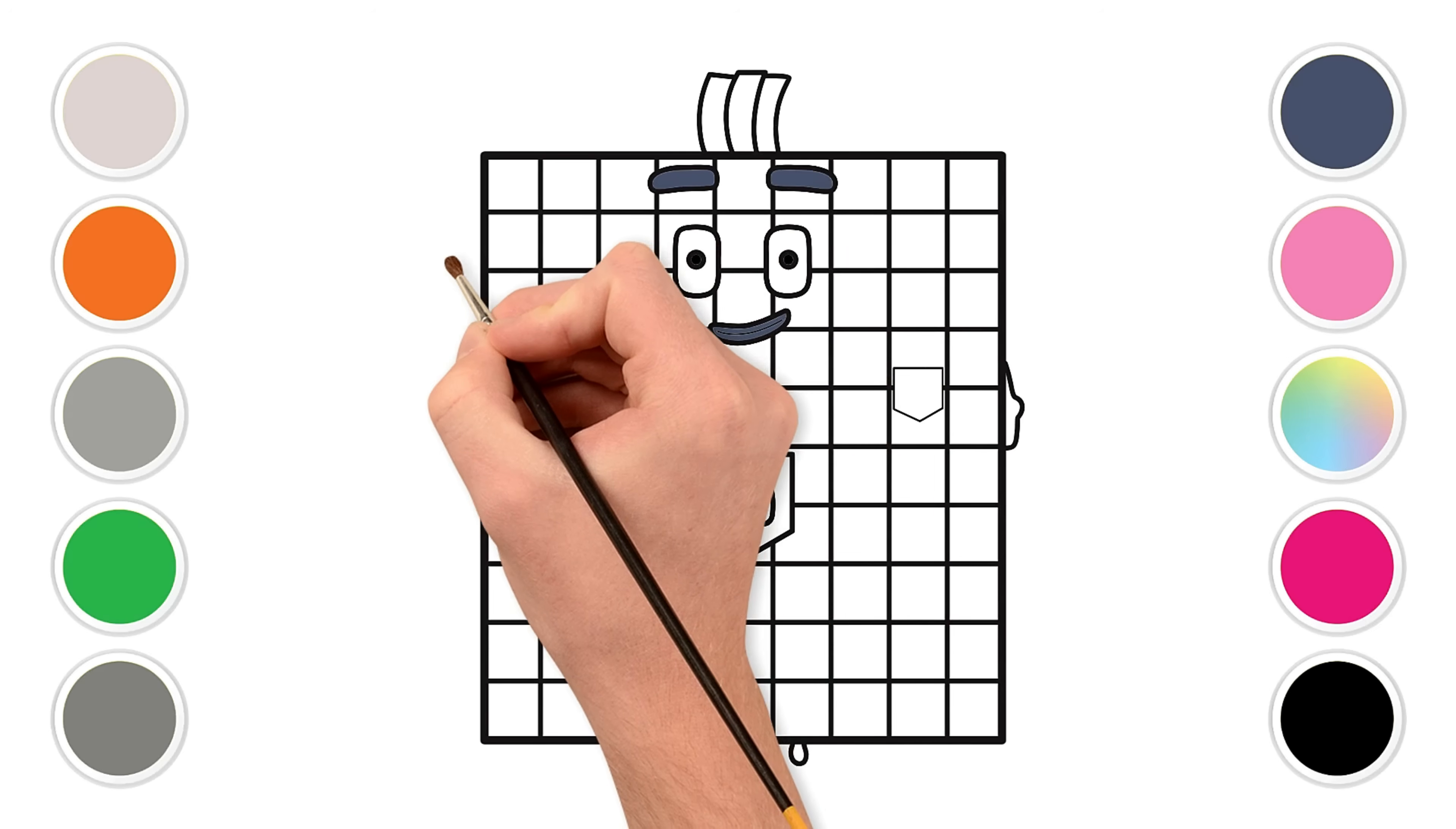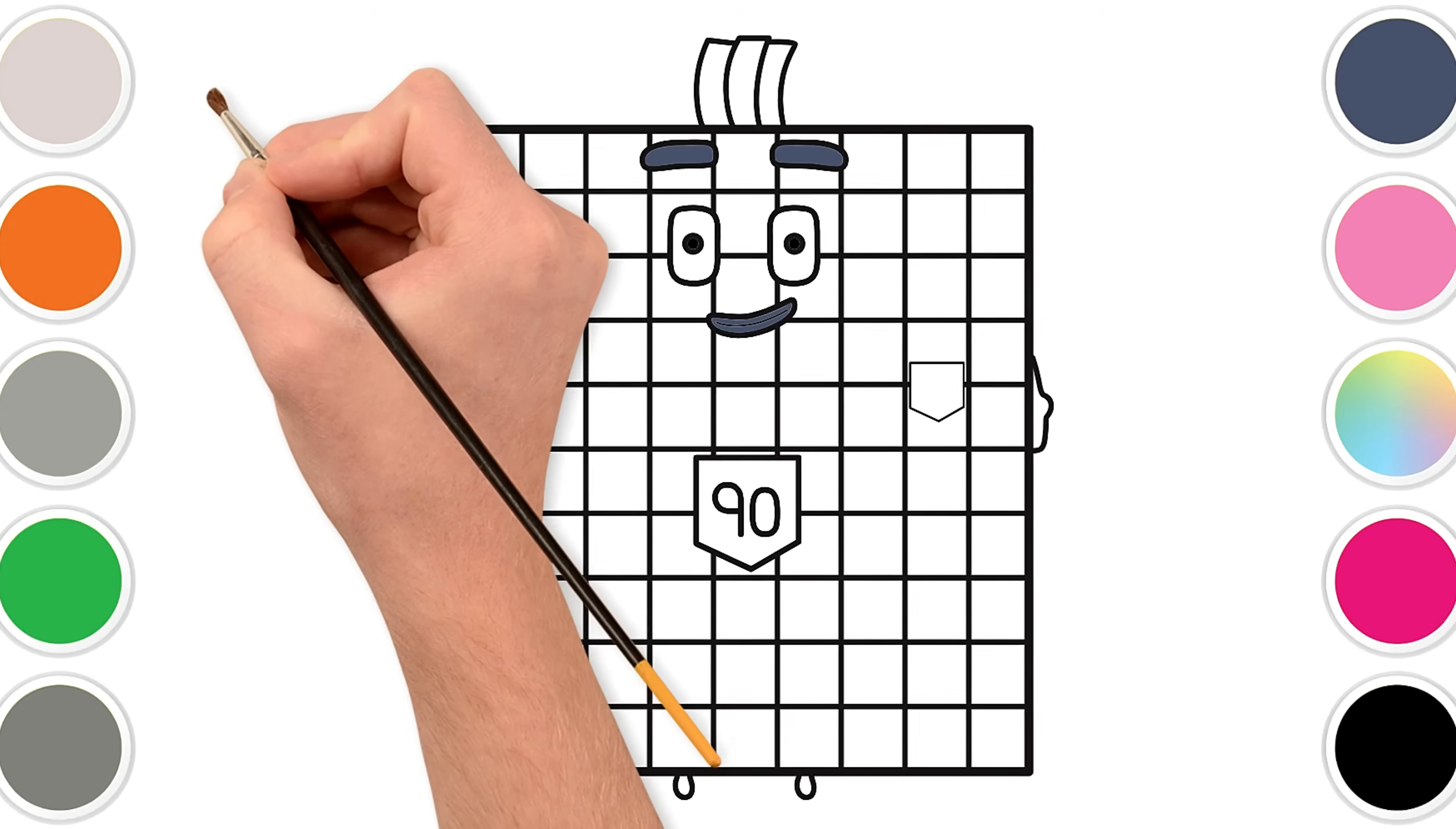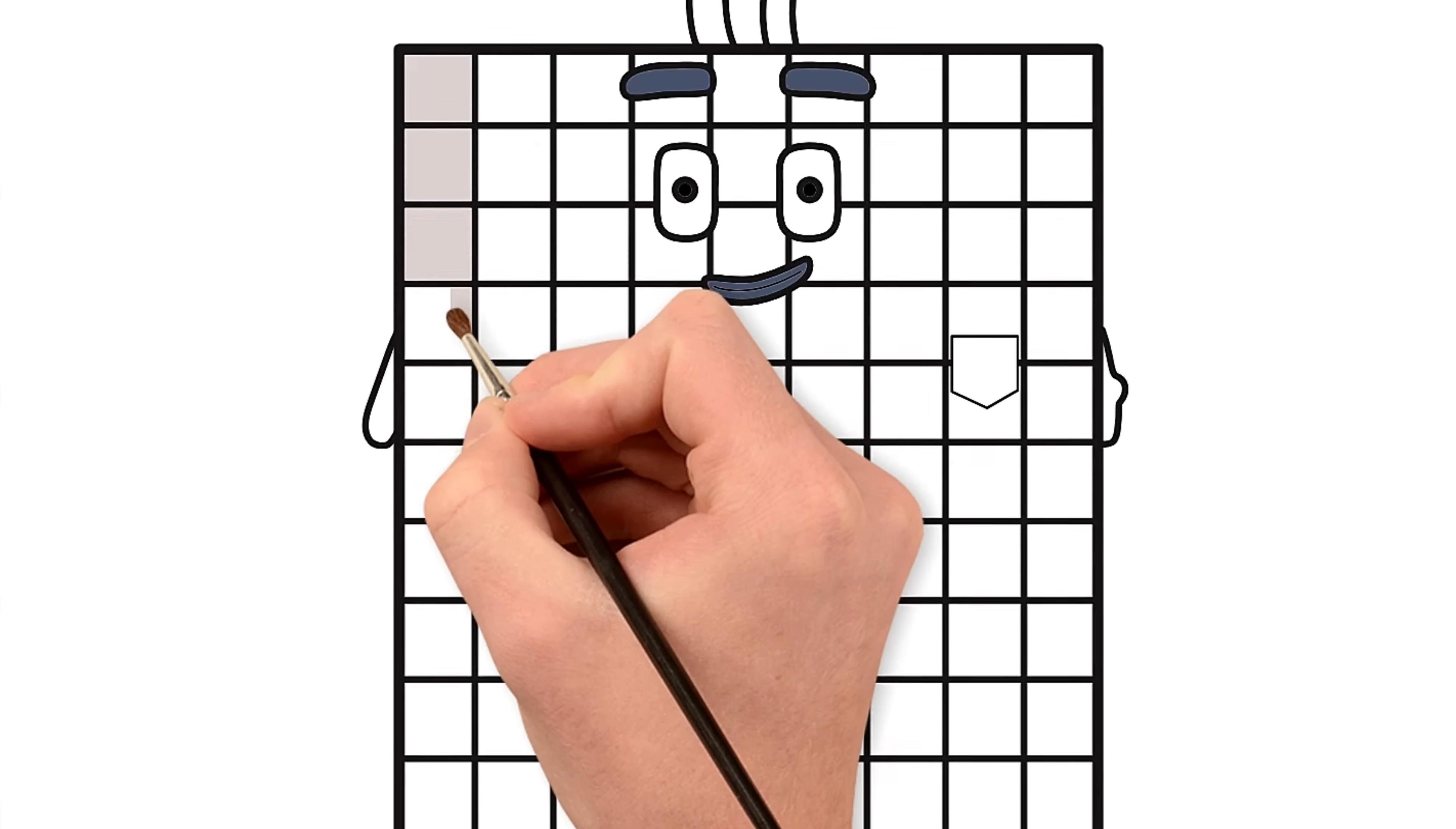Let's color 90's blocks using different shades of gray. Color the first three columns with light gray. That's L-I-G-H-T-G-R-A-Y. Light gray.